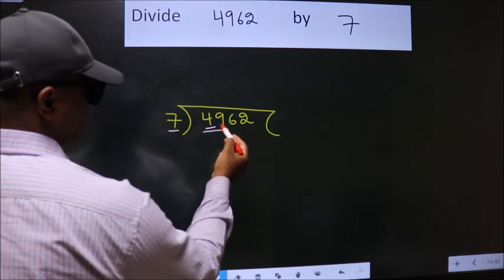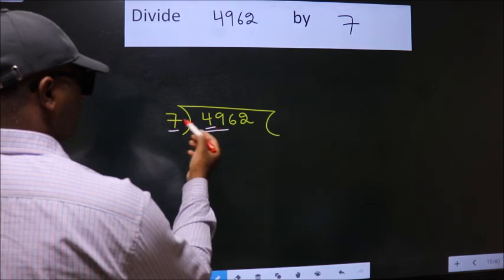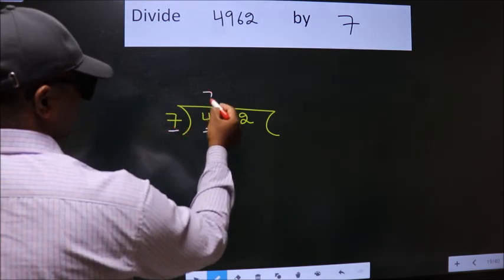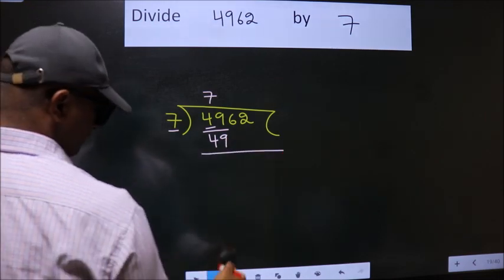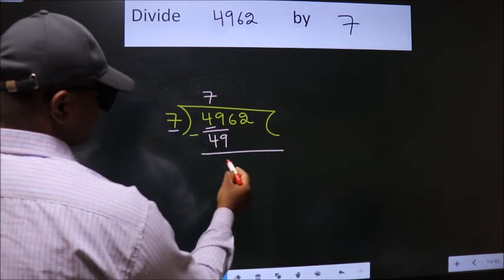So we should take two numbers 49. When do we get 49 in 7 table? 7 7s 49. Now we should subtract. We get 0.